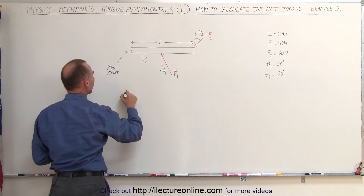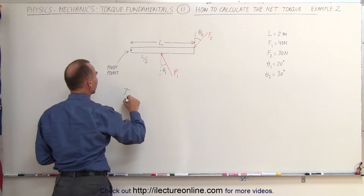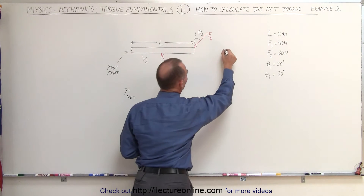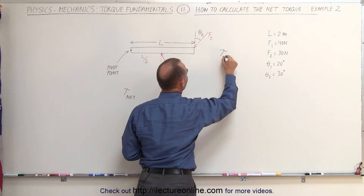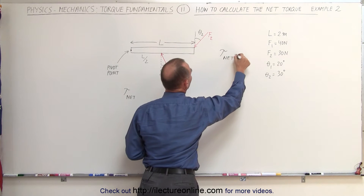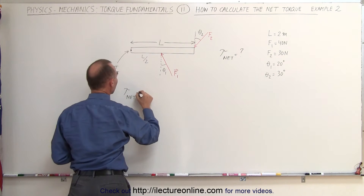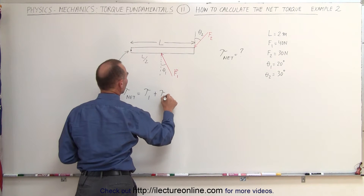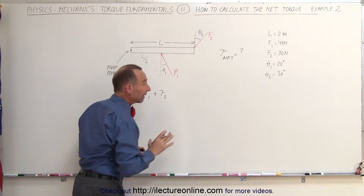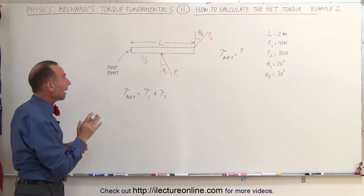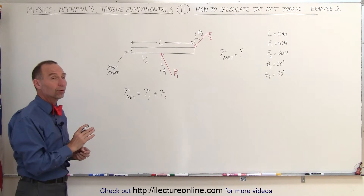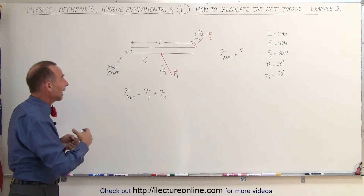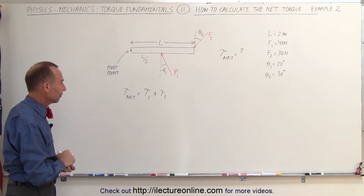We can say that the net torque on this — and that's what we're trying to find, the net torque — is equal to the sum of torque 1 plus torque 2. But since we're adding torques, we do have to take into consideration which direction they act and whether or not they're positive or negative.